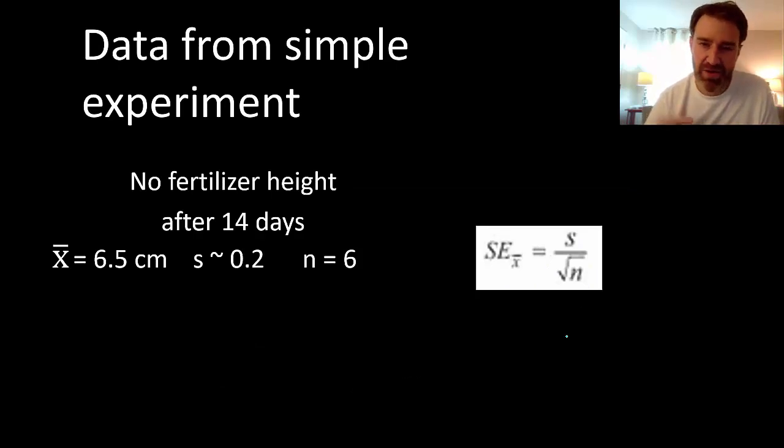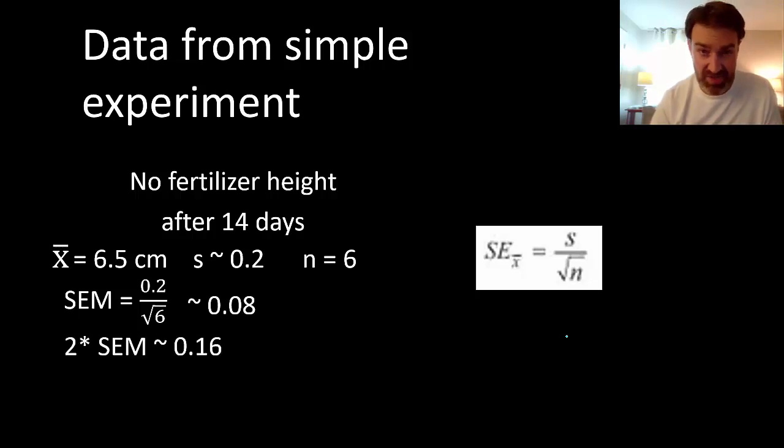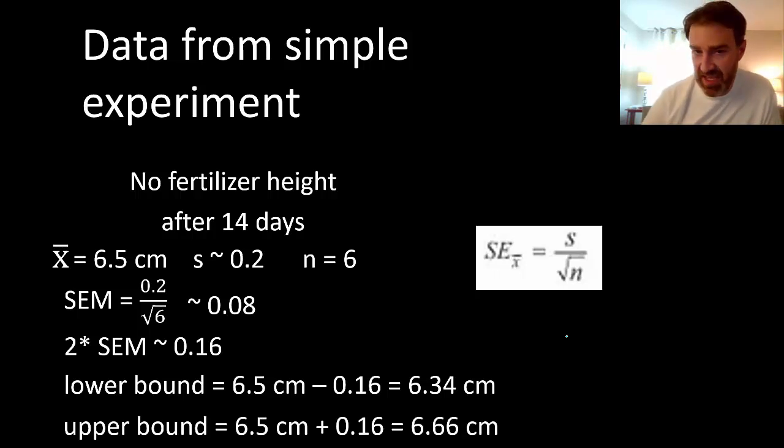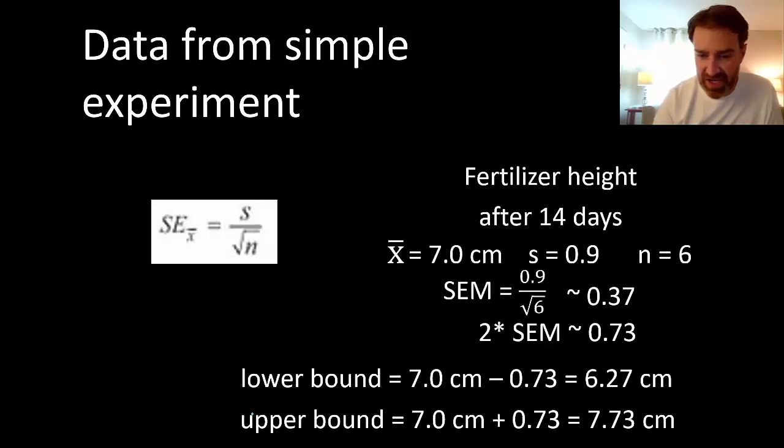Looking at our sample set of data, now we know the mean, standard deviation, and sample size, so we can apply our formula. It's just the standard deviation divided by the square root of the sample size. We're going to multiply that times two, and then take that number and subtract it from our sample mean and also add it. So what we're really saying is with 95% confidence, we think that the true population mean for all these plants that we don't add fertilizer to would be somewhere between 6.34 and 6.66. For the fertilizer group, because we have a larger standard deviation, we're going to get a larger SEM which gives us a larger spread in our overall estimates. They might be anywhere from 6.27 centimeters high to 7.73. A lot more uncertainty there just because of the spread of the data.